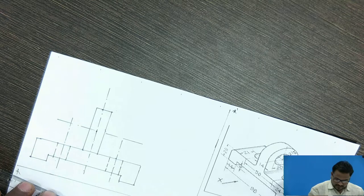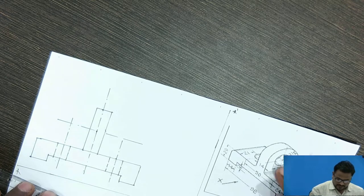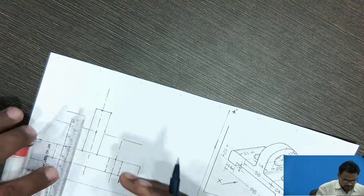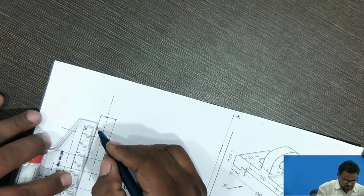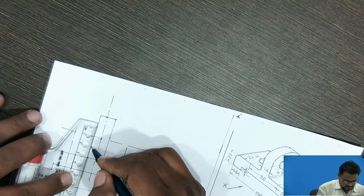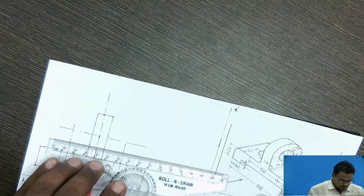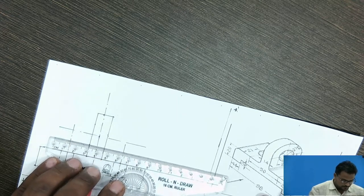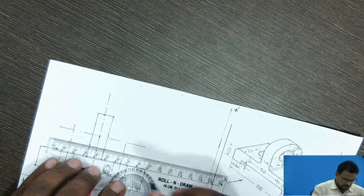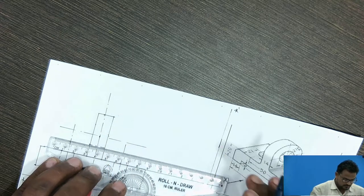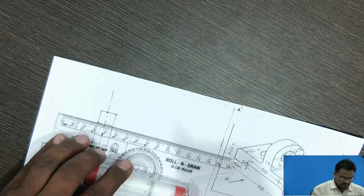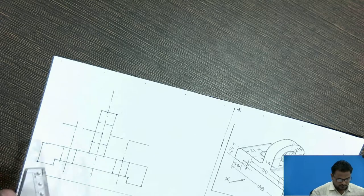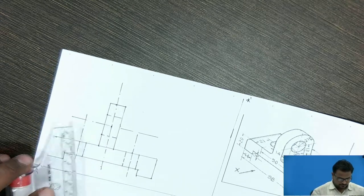The radius is given 21, and its dimension is given 20. Then I have to take 10 mm each side and I am going to draw the dotted line for that hole. So this is how we are going to draw the front view.